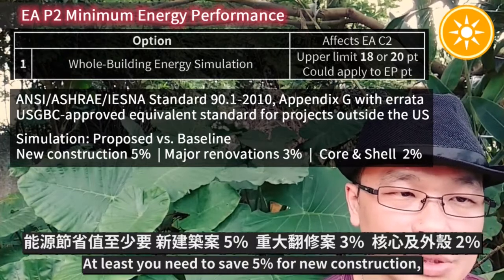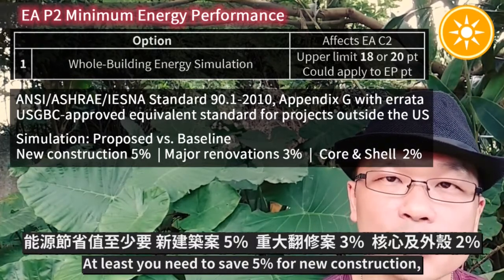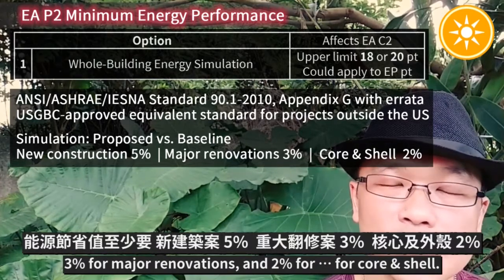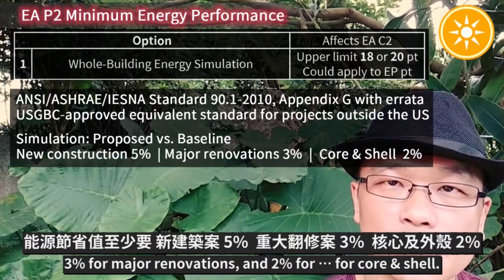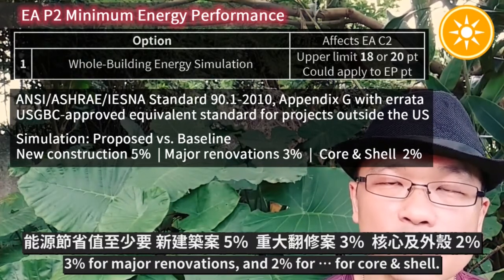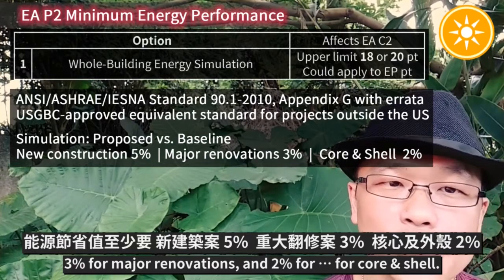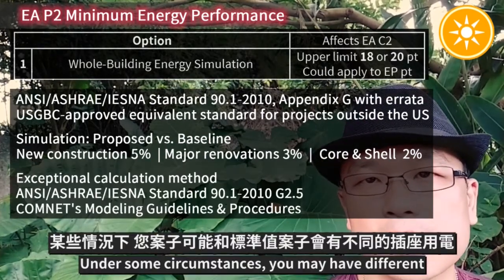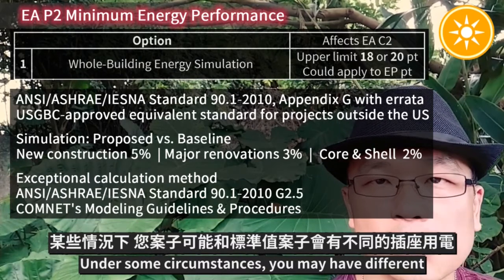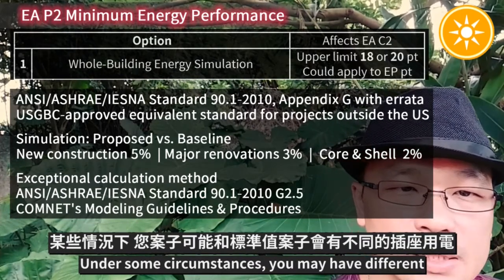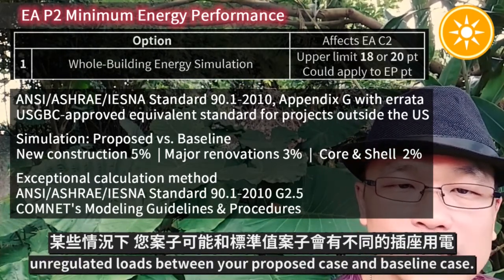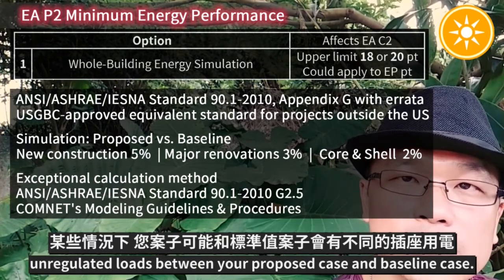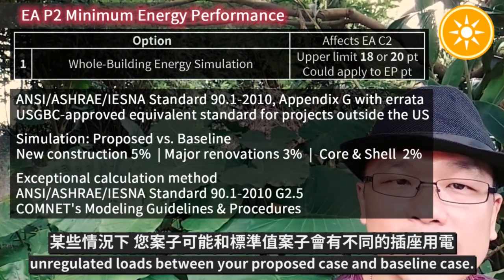At least you need to save 5% for new construction, 3% for major renovation, and 2% for core and shell. Under some circumstances, you may have different unregulated loads between your proposed case and baseline case.